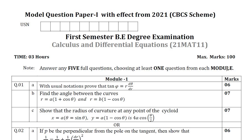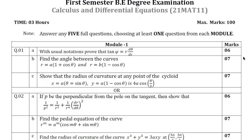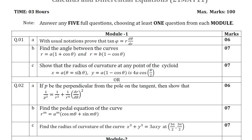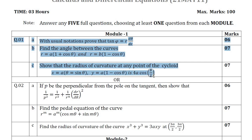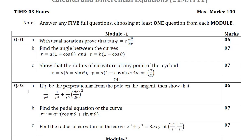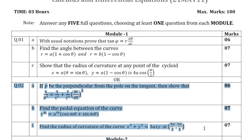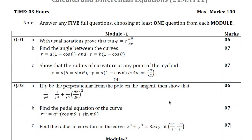Now I will move on to module 1. In module 1 they have given question number 1 and question number 2. From question 1 and 2 you should answer either one full question, means you should answer all of question 1 A B C or you can answer question 2 A B C. Module 1 is of differential calculus 1. Question 1 is with usual notation prove that tan phi is equal to R times d theta by dr. Another way of asking this problem is prove that angle between the radius vector and a tangent is tan phi equal to R into d theta by dr.